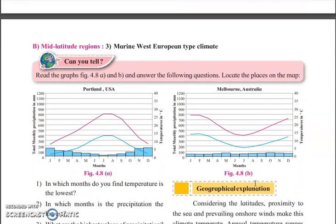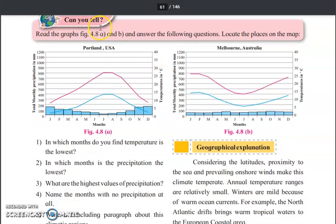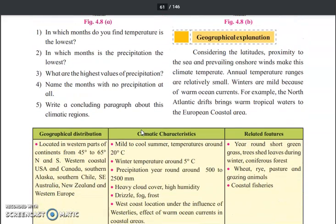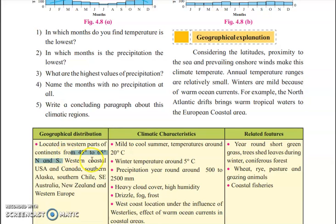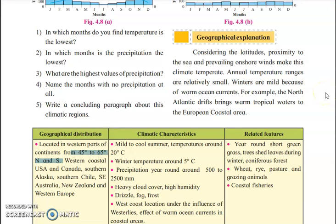The last point to study in the mid-latitudinal region is marine west European type of climate. It has a latitudinal extension from 45 to 65 degrees north and south, so it comes above the China type of climate. The areas where we can see this climate are Canada, USA, Alaska, southern Chile, southeast Australia, New Zealand, and western Europe. A lot of European countries come under this particular climate, hence the name marine west European type of climate.